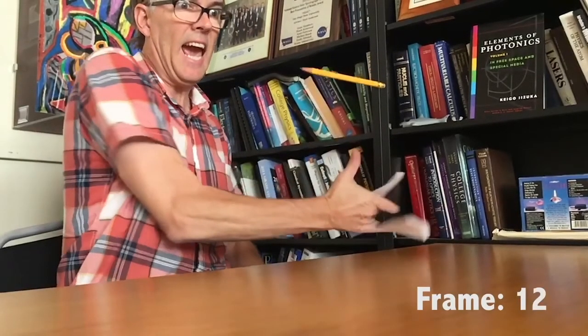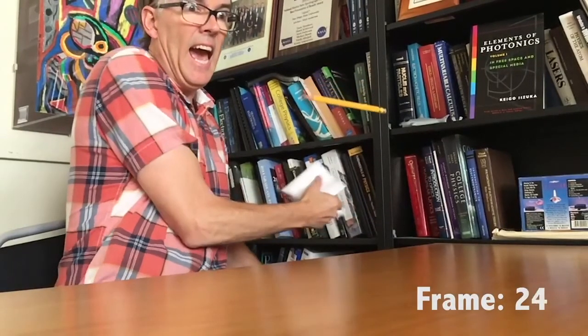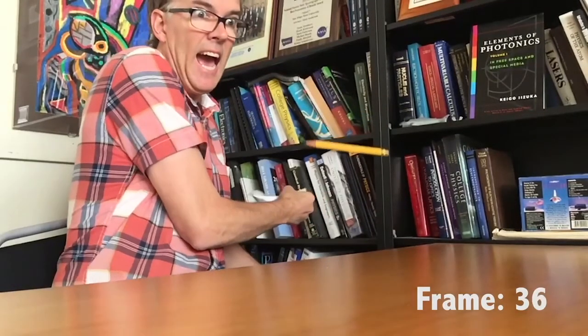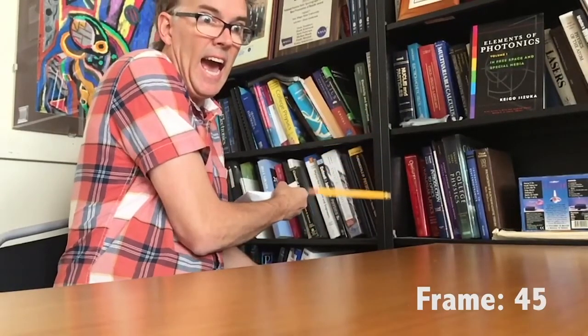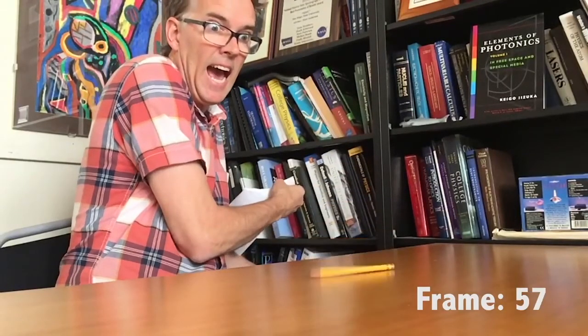This allows the pencil to start evenly at time zero and then fall uniformly towards the table. By stepping through the video frame by frame you can in fact measure how many frames it took to get to the ground. So try it yourself and let's see what you get.